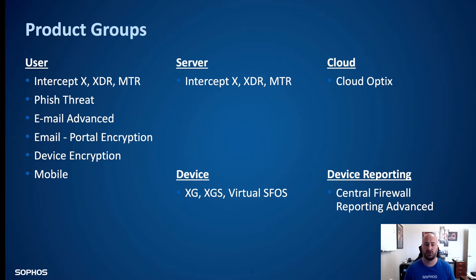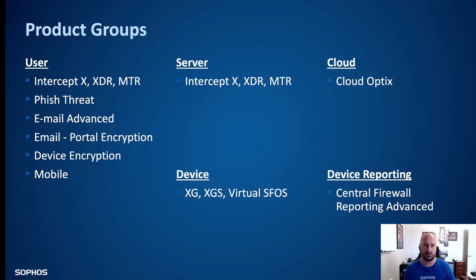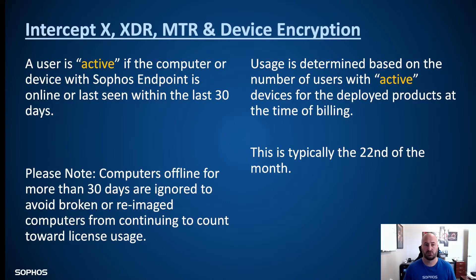Those five categories are user, server, cloud, device, and device reporting. Each of the products inside of the user licensing contribute to that license band and license tier. So your Intercept X licensing, Phish Threat campaigns, email, portal encryption, device encryption, and mobile all contribute to that tier. We're going to go through each one of those licensing options and show you what counts towards usage.